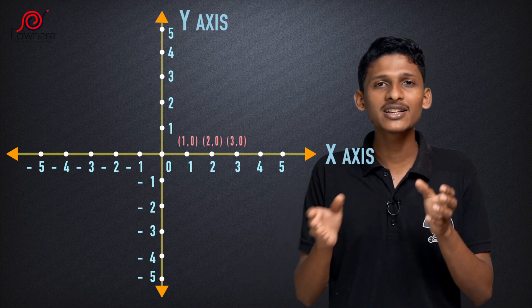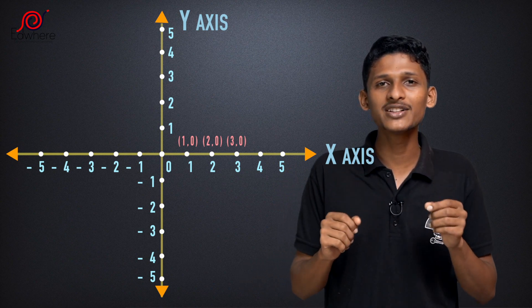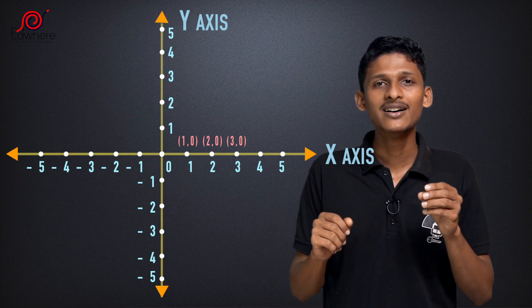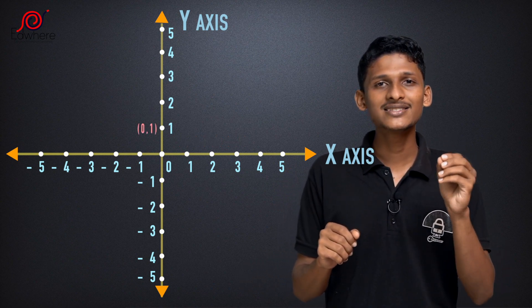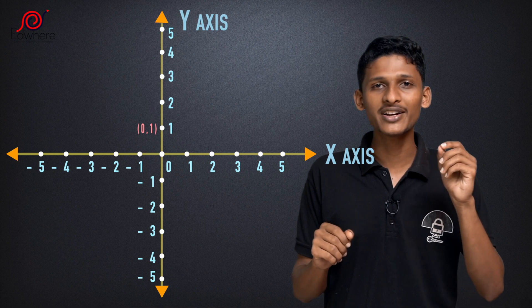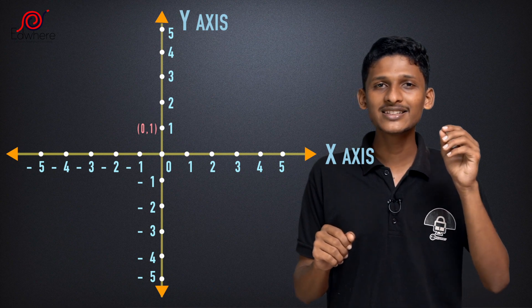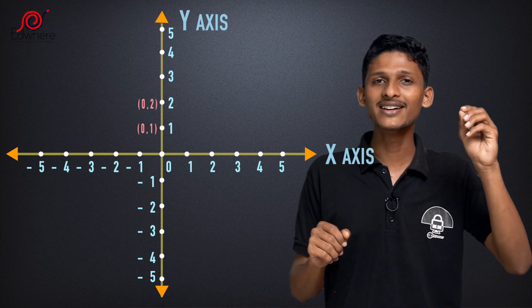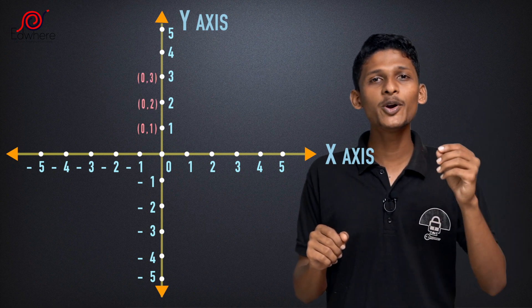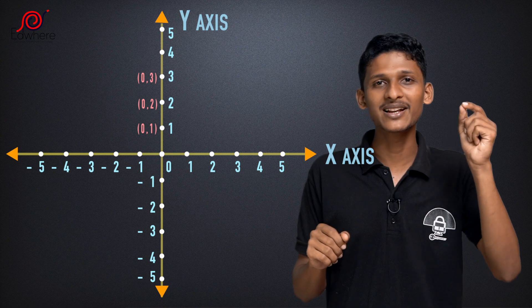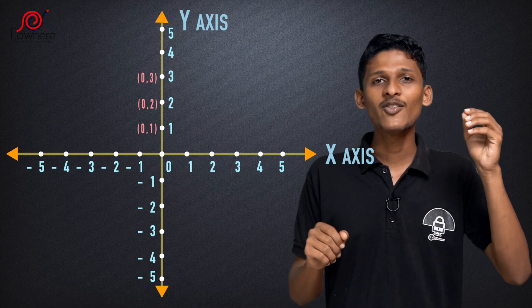Now, let's look at the y-axis points. There is one point here: (0, 1), (0, 2), and (0, 3). If you don't know anything about this point, in the y-axis, the value of the x-axis is zero — that is the line.